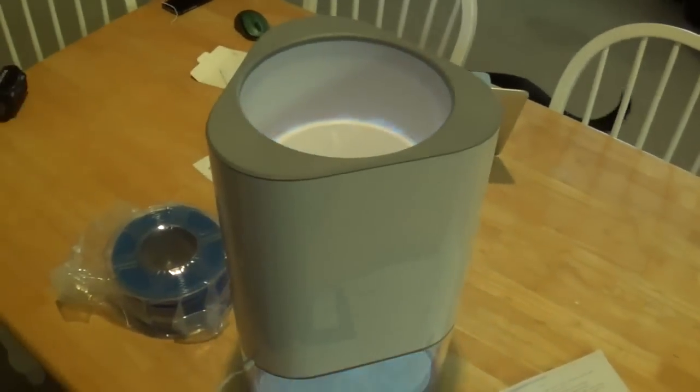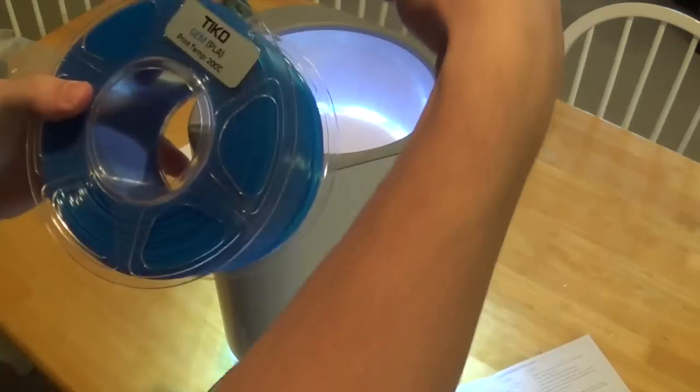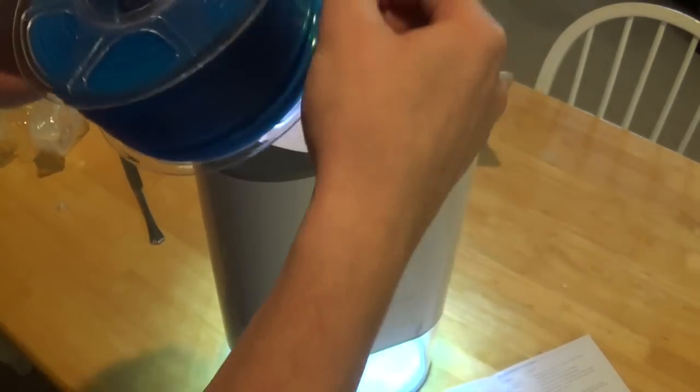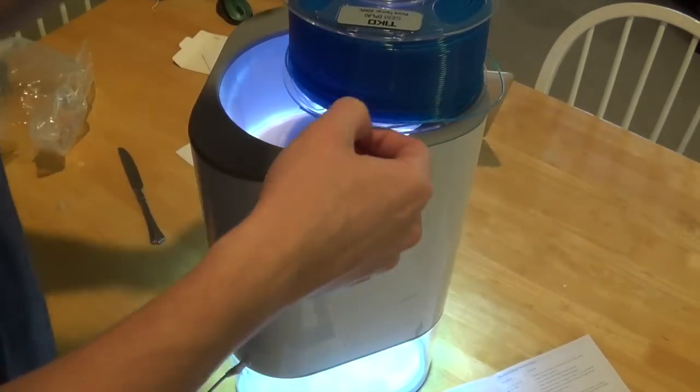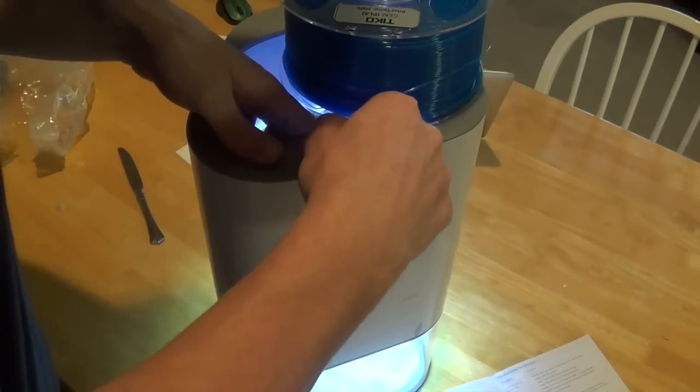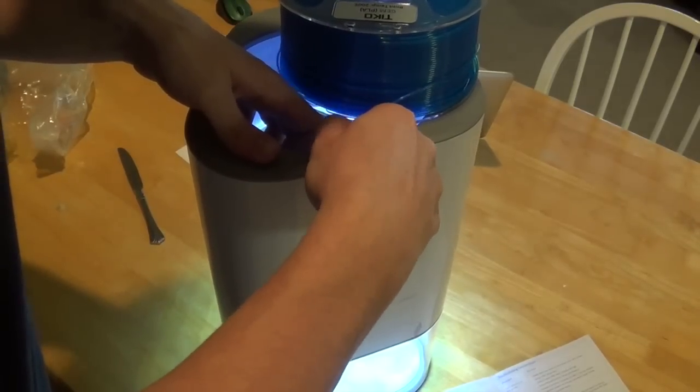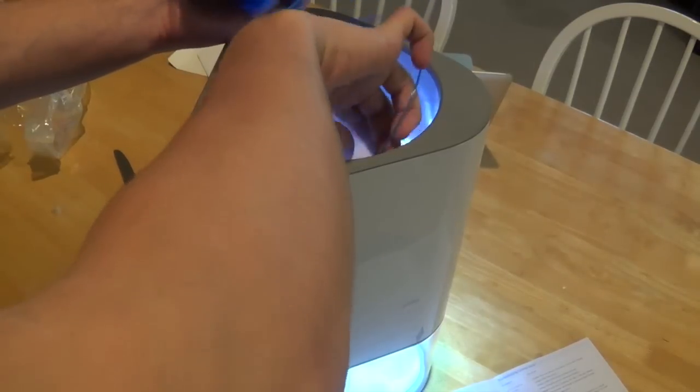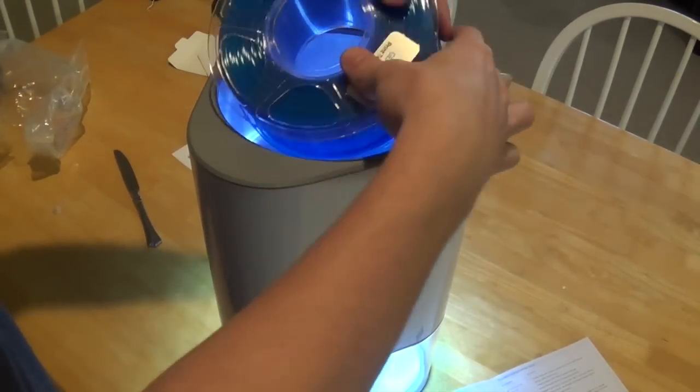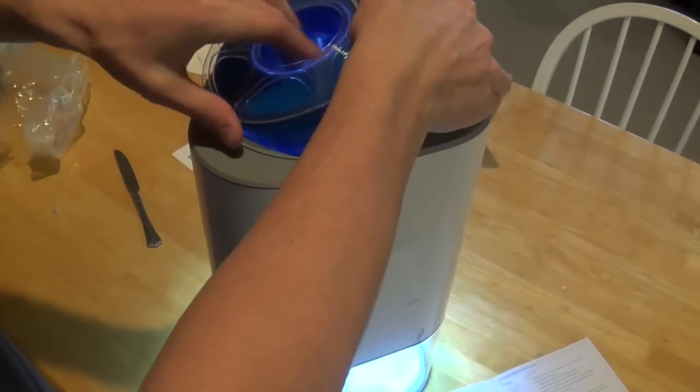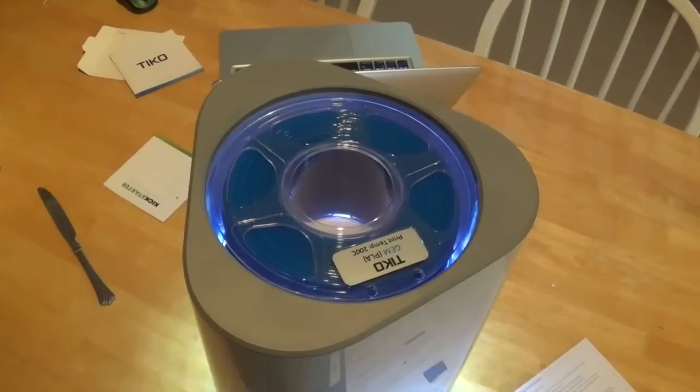You do want to make sure that the spool is going clockwise so that it goes into the machine correctly. Just feed this in, it'll start feeling it automatically pull the filament in. Once it does that, set the rest of the filament inside here. We can see it spinning in there so we know that it's pulling the filament in.